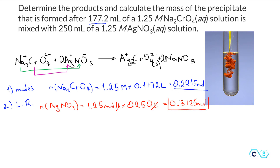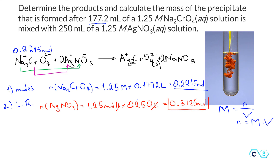Now we determine which is the limiting reactant. Just because sodium chromate has fewer moles (0.2215) doesn't automatically make it limiting. Using the formula moles = concentration × volume, we check: based on sodium chromate and its 1-to-1 molar ratio with silver chromate, it would produce 0.2215 moles of precipitate if it were the limiting reactant.